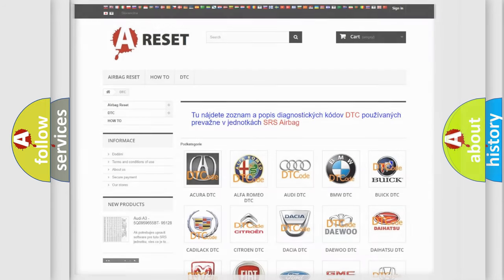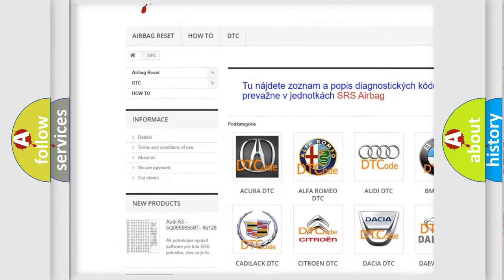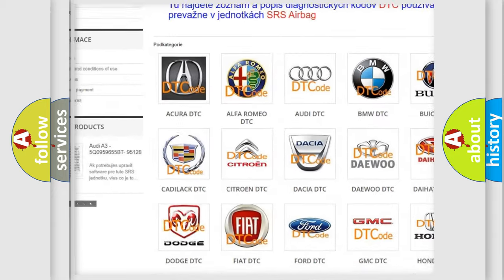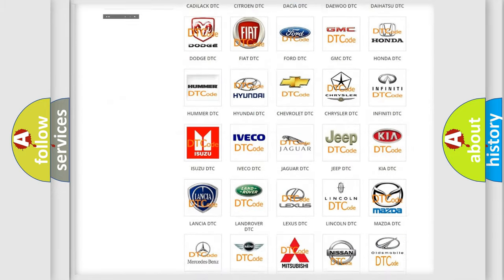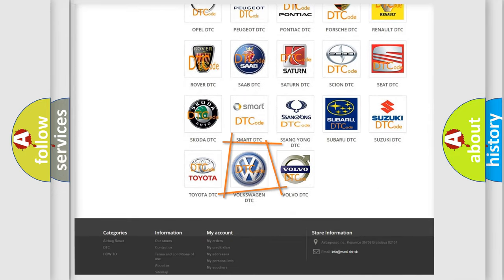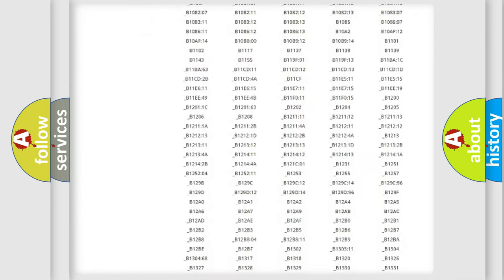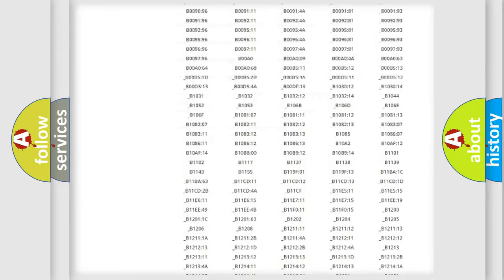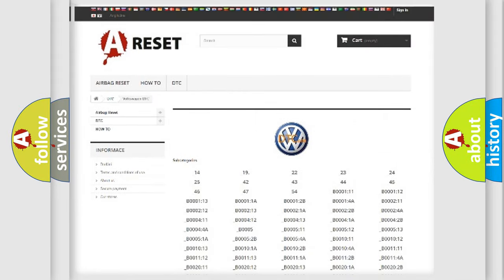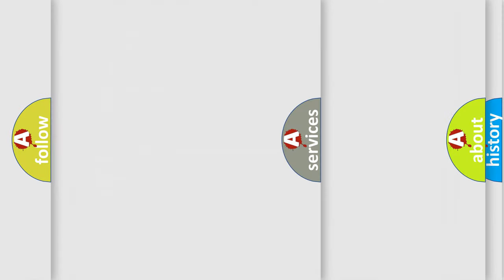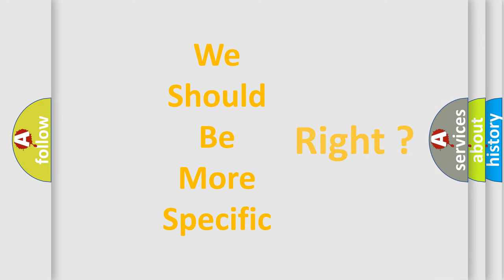Our website airbagreset.sk produces useful videos for you. You do not have to go through the OBD2 protocol anymore to know how to troubleshoot any car breakdown. You will find all the diagnostic codes that can be diagnosed in Volkswagen vehicles, also many other useful things. The following demonstration will help you look into the world of software for car control units.